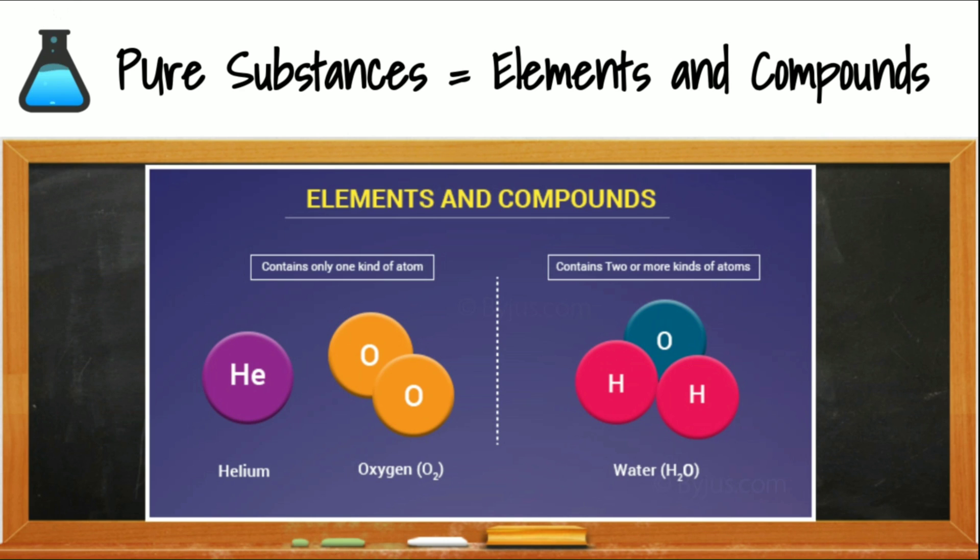Remember that elements contain only one kind of atom. Those atoms can be monoatomic, like helium, or they could be diatomic, like oxygen. So, oxygen is an element where two atoms bond together, but there are still only one element, the element oxygen, versus compounds contain two or more different types of atoms, or two or more different types of elements. Water has two hydrogens and one oxygen.